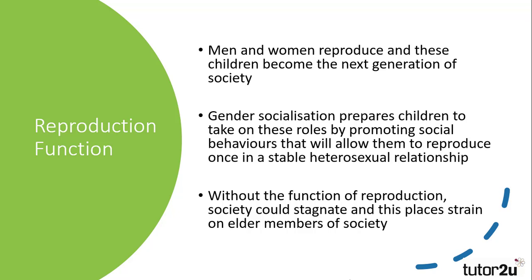Finally, reproduction. Men and women reproduce and have children, and these children take their place as the next generation of society. This is controlled to an extent by the family — gender socialisation prepares children for reproduction in later life, promoting socially acceptable behaviours that allow them to reproduce once in a stable heterosexual relationship. Critics would suggest that in contemporary society, heterosexuality is one of a range of sexualities that exist. But for functionalists, sexuality serves the purpose of reproducing the next generation. Without this, society would stagnate and, as the population ages, this places additional strain on elder members of society to continue working, as seen with changes to the age at which people can collect their pensions.